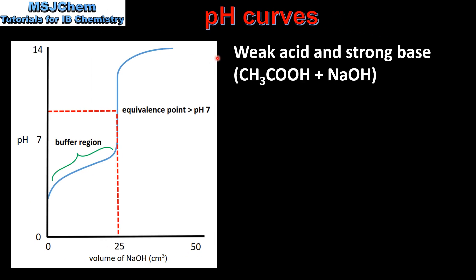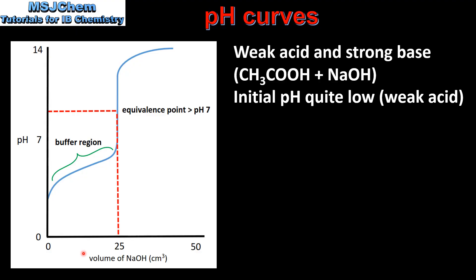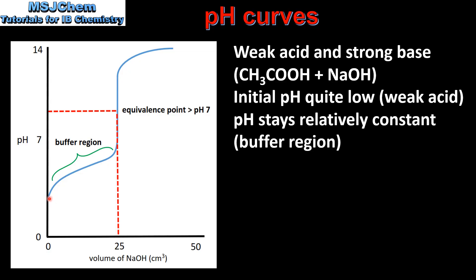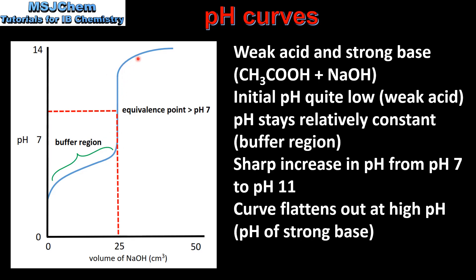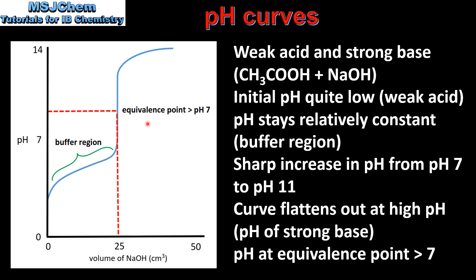The next pH curve is for a weak acid and strong base. Because we are adding the strong base to the weak acid, the initial pH is quite low, which is the pH of a weak acid. The pH stays relatively constant, which is known as the buffer region. There is a sharp increase in pH from pH 7 to pH 11. The curve flattens out at a high pH, which is the pH of a strong base. And the pH of the equivalence point is greater than 7.